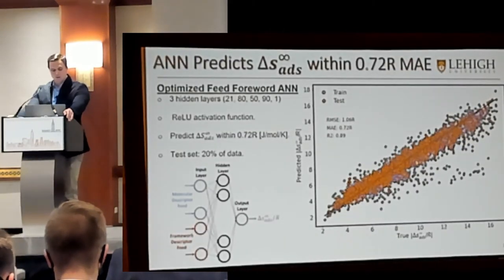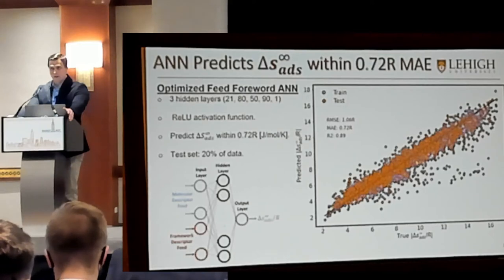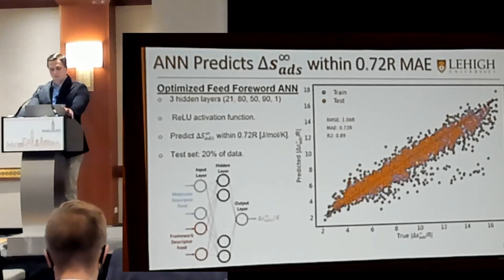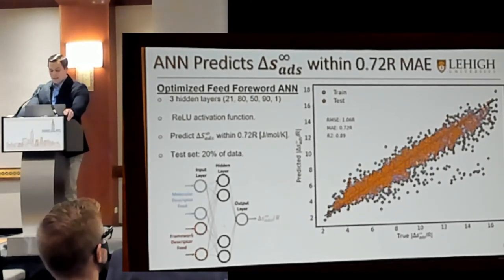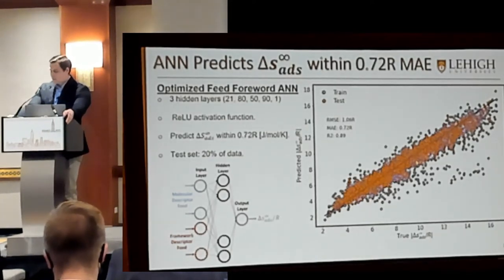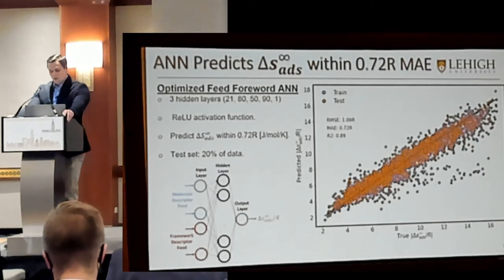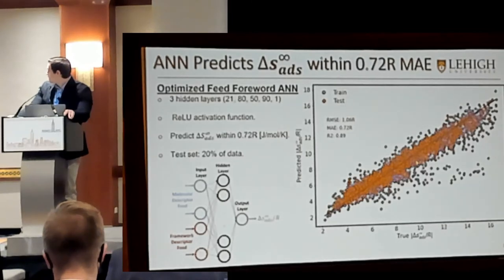Here we have our optimized artificial neural network. We were able to predict the entropy with a mean absolute error of about 0.72R. We used a very simple neural network consisting of three hidden layers with 80, 50, and 90 neurons respectively, with a rectified linear unit activation function. What we found is that the model struggled a bit in predicting systems that exhibited higher entropic loss. As you can see from the histogram earlier, most of our entropic values fell between 4 and 8R, but as we move towards higher entropic losses, the model has a hard time predicting those values.